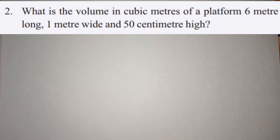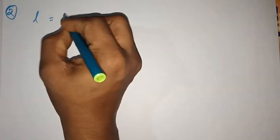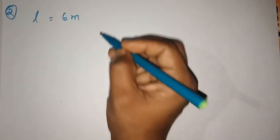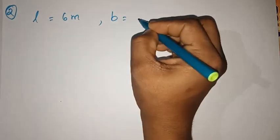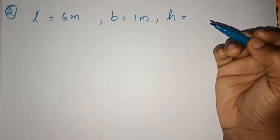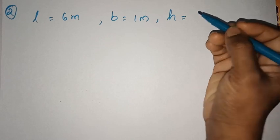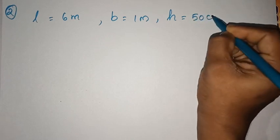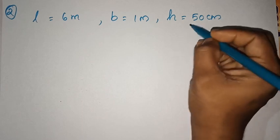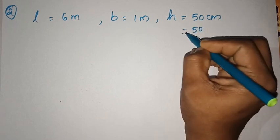We will write: length is equal to 6 meters, breadth is equal to 1 meter, height is equal to 50 centimeters. We need to convert 50 centimeters to meters: 50 divided by 100.